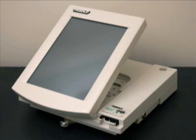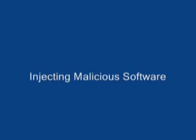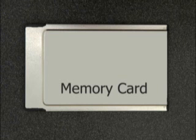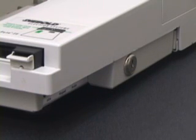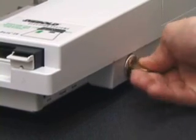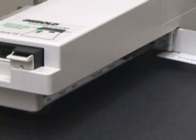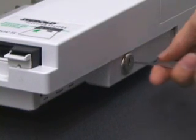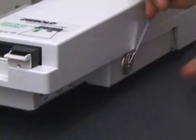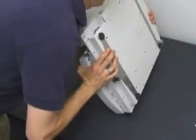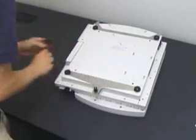This vote-stealing attack requires injecting malicious software into the voting machine. Anyone who has access to a voting machine for a few minutes can install malicious code. Here is one way to do so: in advance, we prepare a memory card containing our malicious software. When we get a few minutes alone with the machine, we first open the side door. We can do this with a key — there are thousands of keys in circulation, and any hardware store will copy them. Even without a key, the lock is easily picked. One member of our team can consistently pick the lock in less than 10 seconds. Or, we can simply remove a few screws and lift off the machine's cover.